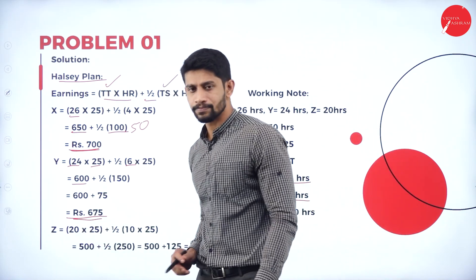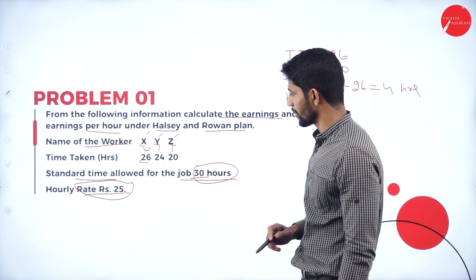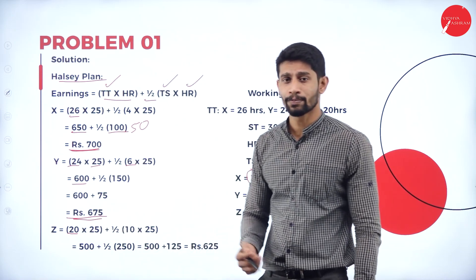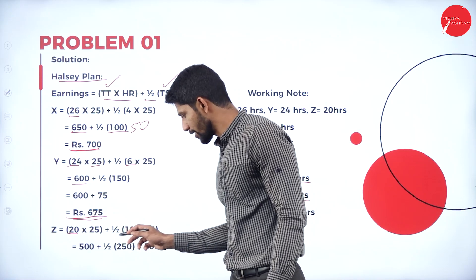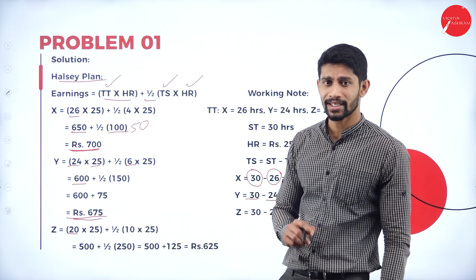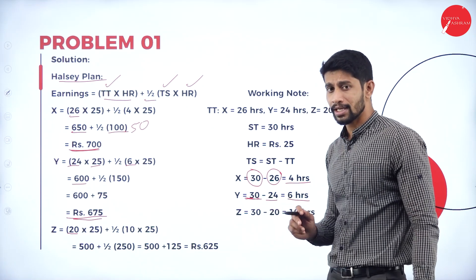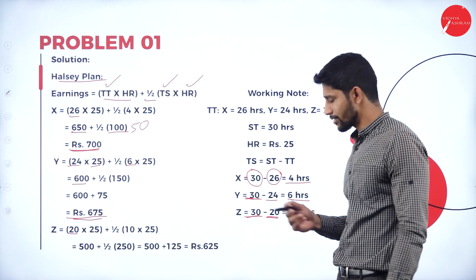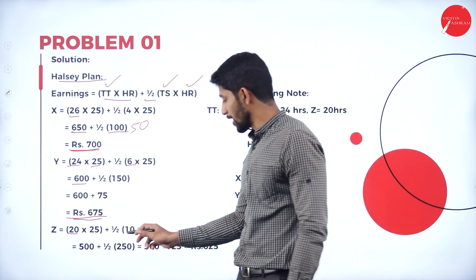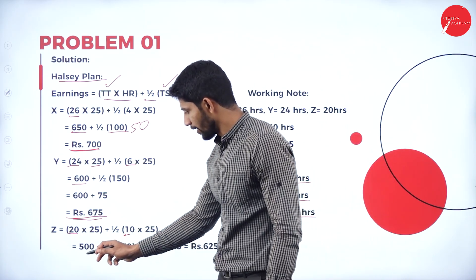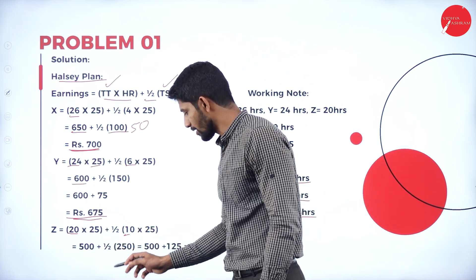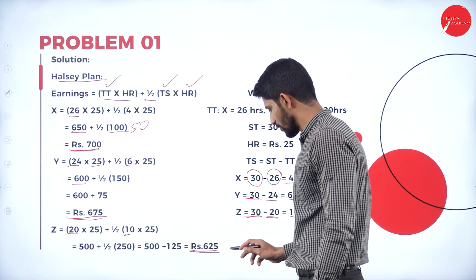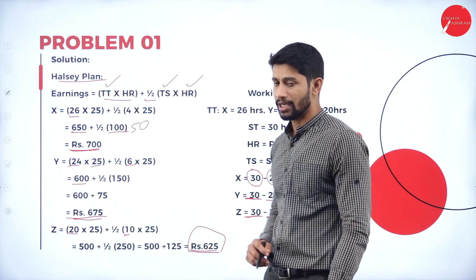Next, Mr. Z. Time taken is 20 hours into 25 rupees per hour, plus half of time saved into hourly rate. Standard time is 30 hours and he took only 20 hours, so time saved is 10 hours. So 20 × 25 = 500, plus half of 10 × 25 = half of 250 = 125. Therefore 500 + 125 = 625 rupees is the earning of Mr. Z under Halsey Plan.